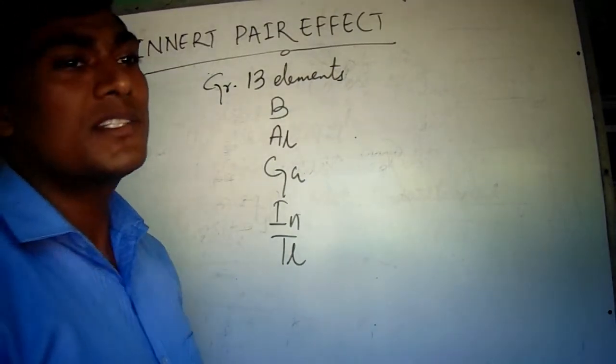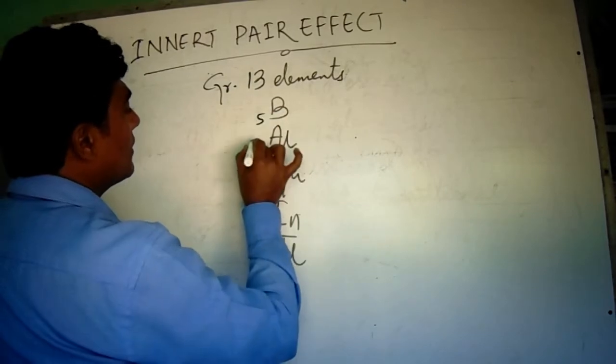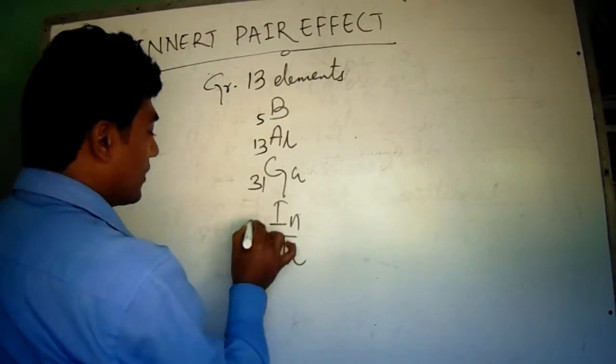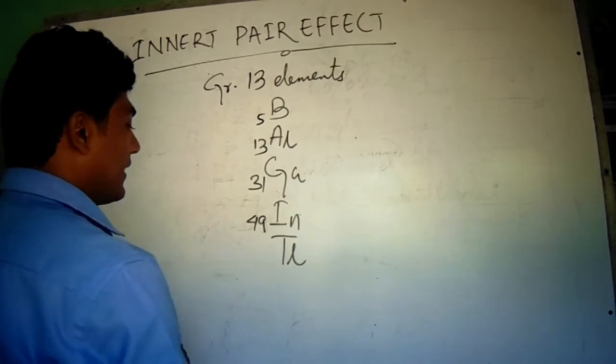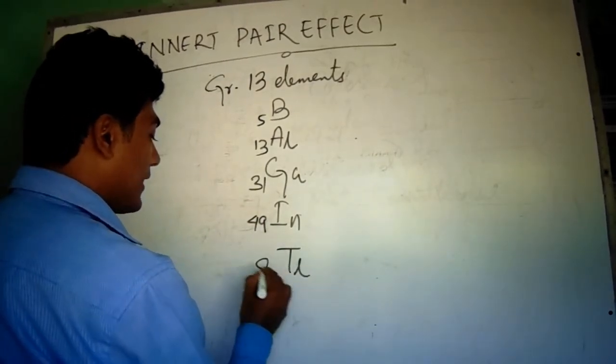The atomic numbers are 5, 13, 31, 49 and thallium 81.